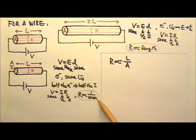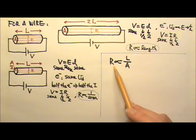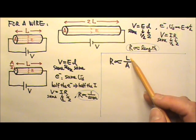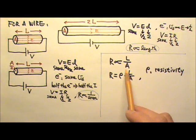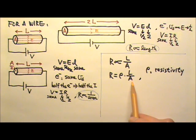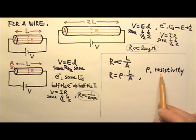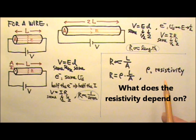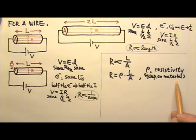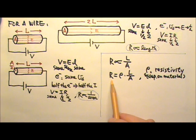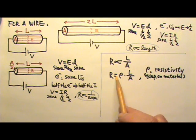If we combine these two conclusions, we have the resistance of a wire being proportional to the length L over its cross-sectional area A. Therefore, we can turn this into an equation: R equals a constant rho times L over A. We call this constant rho the resistivity. The resistivity depends on the material of the wire, so the resistance of a wire depends on its dimensions and the material it is made of.